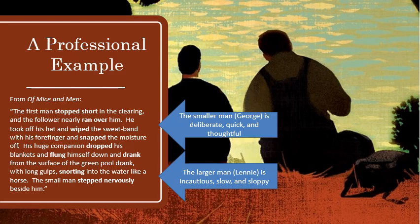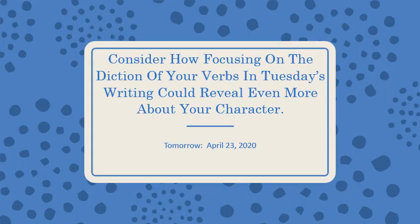You really have to start immediately with your writing being careful about the words you're choosing, so that those words get across the ideas about your characters that you want. For tomorrow, I want you to consider how focusing on the diction of your verbs — going back to the verbs, those actions — how can you pick verbs from Tuesday's writings that reveal more about your character? That tell us things about your character's beliefs, actions, physical appearances, and personal relationships that will help us understand who they are and make them an even more real person. I'm excited to see what you guys come up with, and I'll see you back here later.